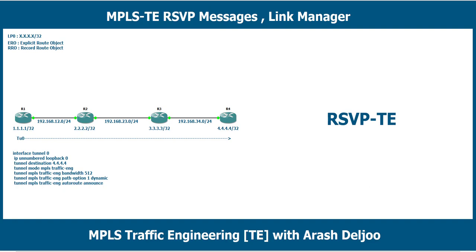Let me start to talk about RSVP. Here we have a scenario with R1, R2, R3, and R4. I configured the links between Router 1 to Router 2, Router 2 to Router 3, and Router 3 to Router 4 with a specific IP addressing range. I also configured one loopback IP address on R1, R2, R3, and R4. Finally, I configured one traffic engineering tunnel.